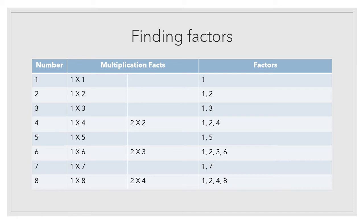Seven comes in only two tables: one sevens are seven and seven ones are seven. So seven has only two factors: one and seven. Next is eight — one eights are eight, two fours are eight, four twos are eight. So the factors of eight are one, two, four, and eight.